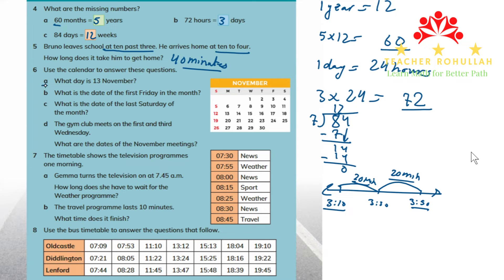In part A, it says: what day is 13 November? The 1st of November is on Wednesday, so if we count forward to the 13th, 13 November is a Monday.